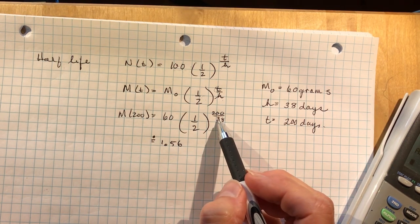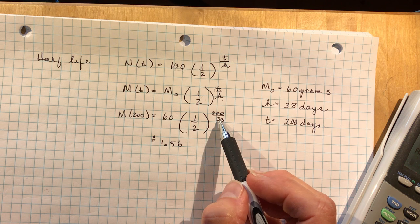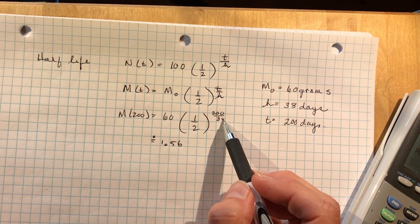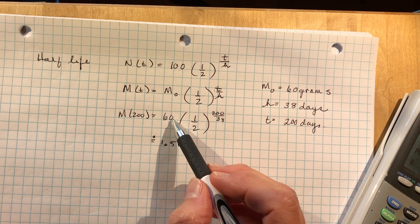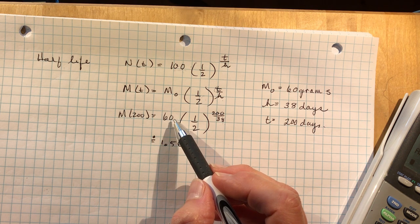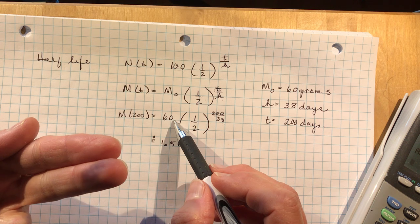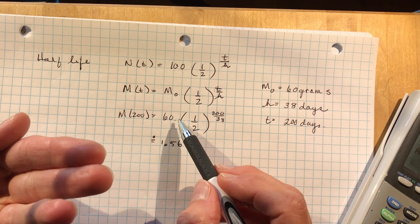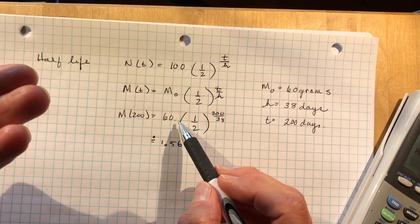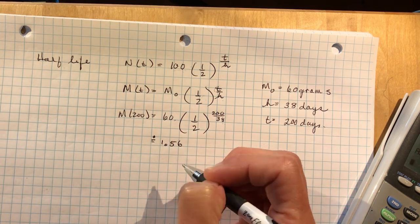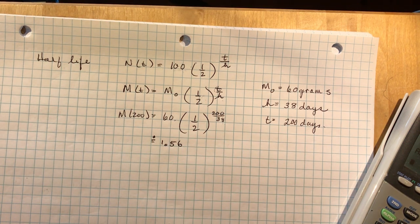Does that make sense? So we said if you do 200 divided by 38, that means it halved a little more than 5 times. So if I take 60 and I take it by half, that's 30. 30, that's 1. 15 is 2. 7 and a half is 3. 3.75 is 4. And half of 3.75, something around 1.56. So make sure that your answers make sense.